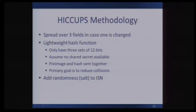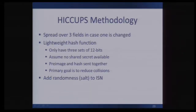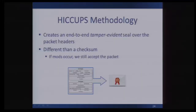We spread the check over three fields in case one has changed. In some of our early work we found you can't just rely on the initial sequence number, because quite a few boxes out there translate and change it. We use a lightweight hash function because we only have a little bit of space — just three sets of 12 bits. We make the assumption that there's no shared secret available so we can work in the general case with anonymous hosts on the internet. The result is an end-to-end tamper evidence seal over the packet headers. This is different from a checksum: if a modification occurs, we still accept the packet — TCP just gets extra information about what happened and can try to recover or bring it to the user's attention.